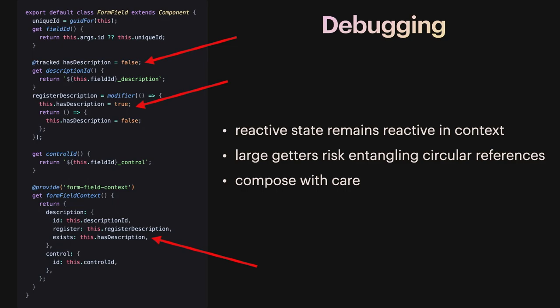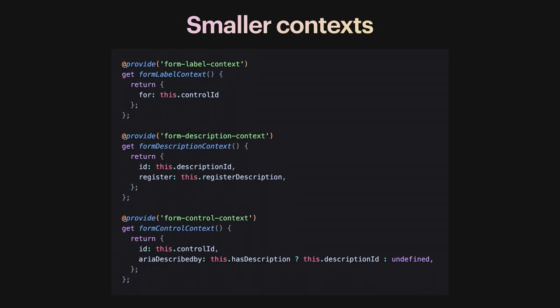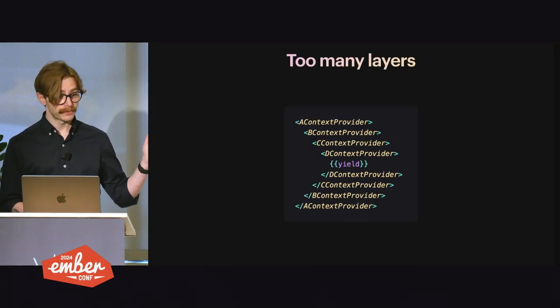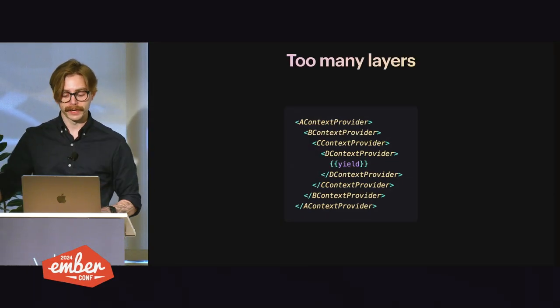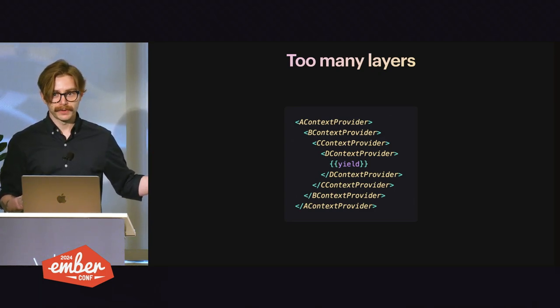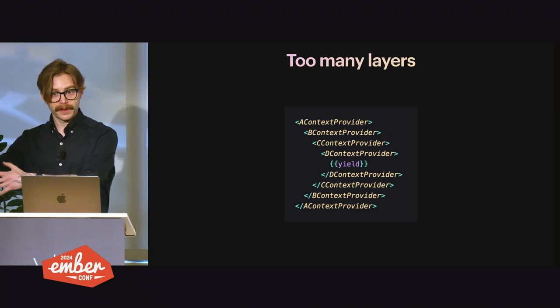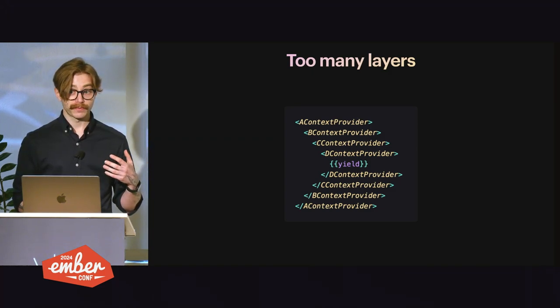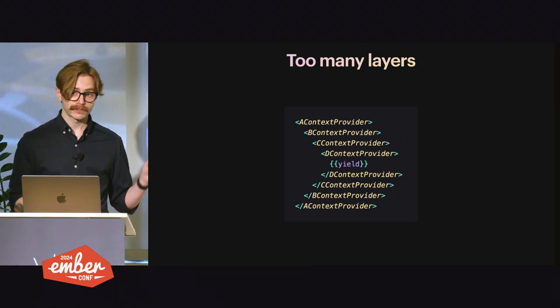With context it's particularly important to be vigilant about how we arrange our getters and tracked properties, because the disconnection between components that provide and consume context makes it easy to forget these connections actually exist. One fix is to break it up into multiple smaller contexts — one component can provide multiple contexts as long as they all have different names. The actual fix here is to remove the 'has description' accessor from the description context and move it into the form control context. As your app grows — and you may have seen this in React context implementations — if you have a lot of template-based context your app is going to keep growing sideways. With the provide decorator implementation you can provide multiple contexts from one component, so you might not see this issue at all.